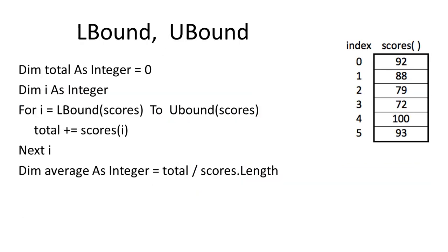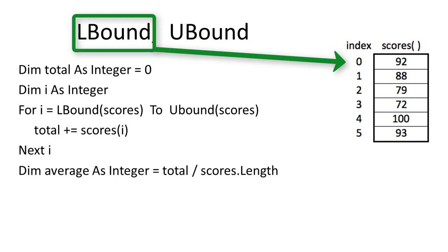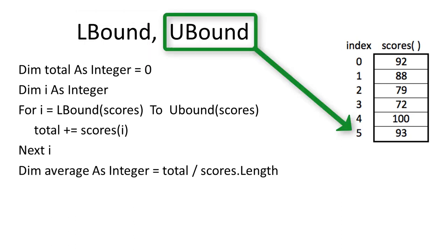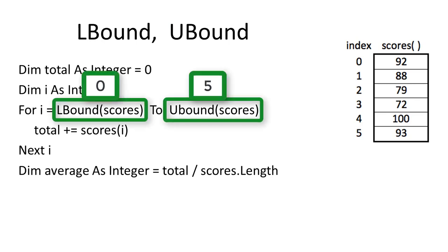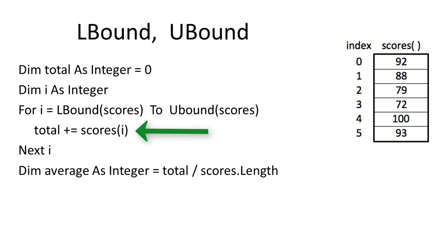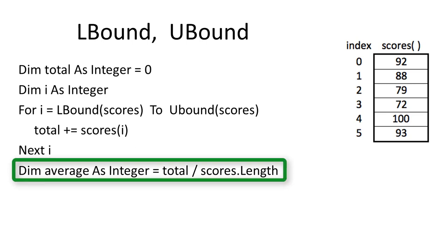Visual Basic has two functions that work with arrays to determine the lower and upper index values. LBound is the lower value, typically 0. UBound is the upper limit for the index values, typically the length of the array minus 1. Using LBound and UBound makes it easier when writing a for loop — the code steps from 0 to 5, adding a total of all the values in the scores array. When the for loop is complete, the average is computed using the total divided by the number of elements specified by scores.length.